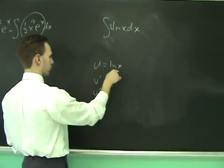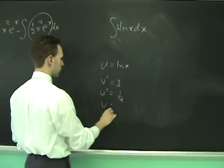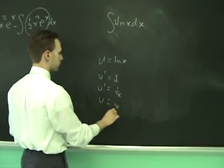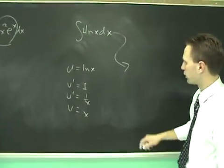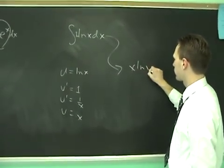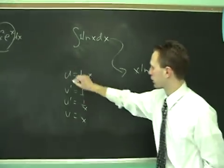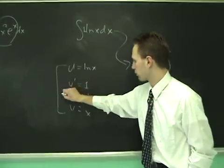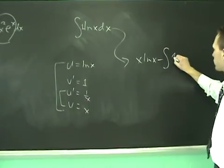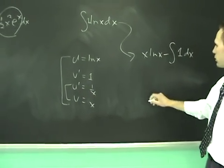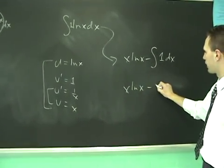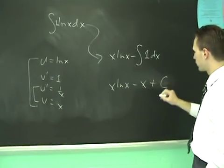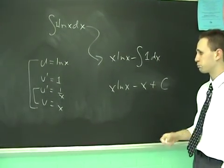So to carry it out, u-prime is one over x, v is x, and according to the formula, it turns into uv, which is x ln x, minus the integral of one over x times x, which is one dx. So that's easy to do. You get x ln x minus the integral of that is x plus c. You can check your answer with differentiation, and that's it.